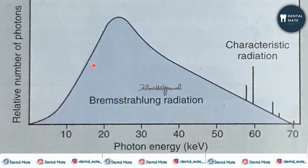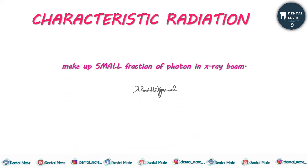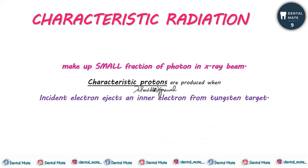Now, characteristic radiation. Characteristic radiation makes up a small fraction of the photons in the X-ray beam. These characteristic photons are produced when the incident electron ejects an electron from the inner orbital of the tungsten target. Let's have an example.